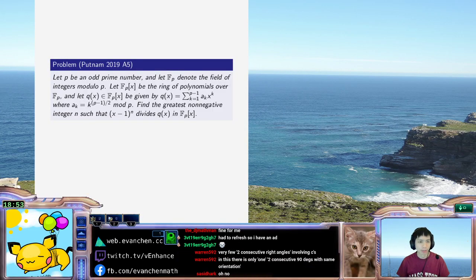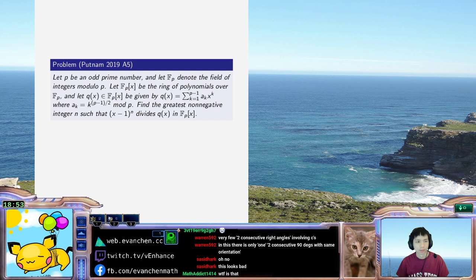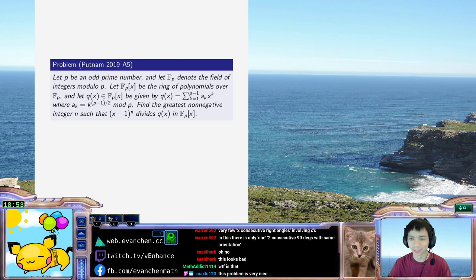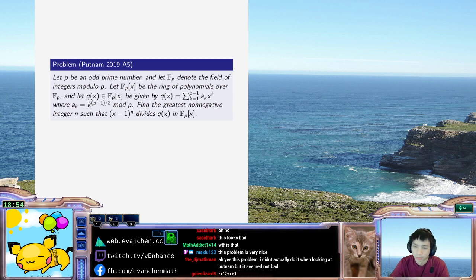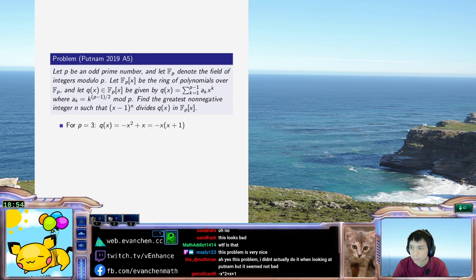So basically I need to factor this quadratic residue thing. Let's start by doing the small cases because I have no idea what's going on. For P equals three, Q of X, two is not a quadratic residue and one is, so this one is for P equals three there's no plus one, right?